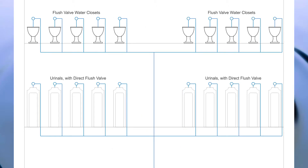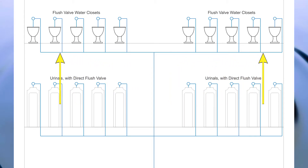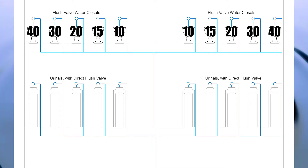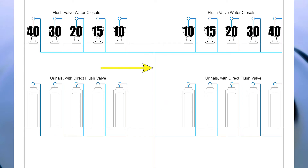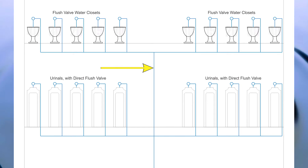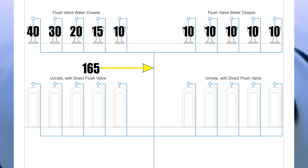For my last example, I have a variation where the common pipe feeding the top story branches off either way to feed five flush valve water closets on either side. Overlaying the fixture unit values we saw before, we get 115 fixture units on this branch and 115 fixture units on this branch. But now I want to look at the common pipe — because it serves all 10 flush valve water closets, we need to add up the fixture units differently, which equals 165 fixture units.